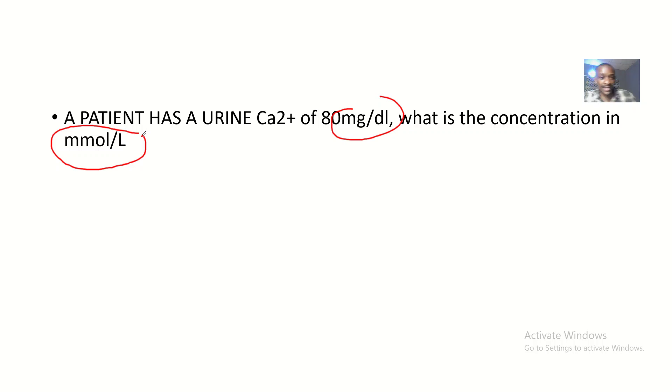That's what we'll be looking at. This question was asked in the exam: A patient has a urine calcium concentration of about 80 milligrams per deciliter.